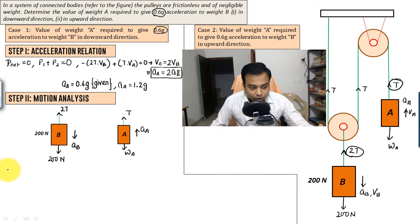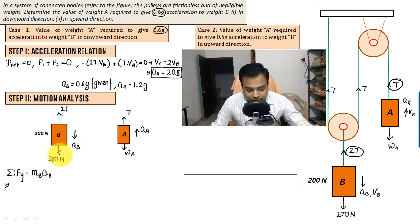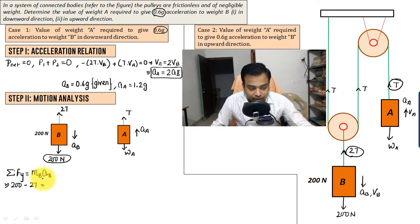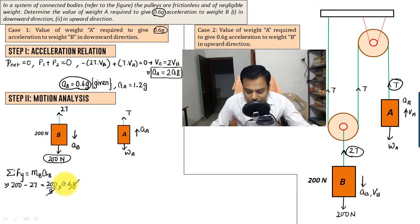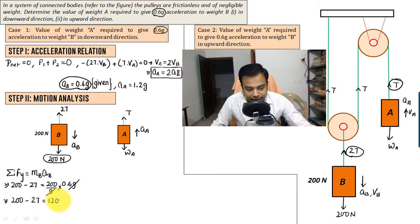Motion is happening in the vertical direction. Summation of forces in the y-axis equals mass times acceleration. For block B, motion is downward, so 200 N is positive and 2T is negative: 200 − 2T = (200/g) × 0.6g. G cancels, giving 200 × 0.6 = 120. So the equation is: 200 − 2T = 120. That's equation number 1.